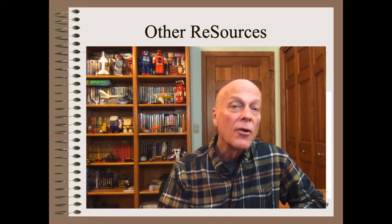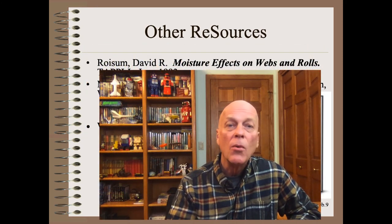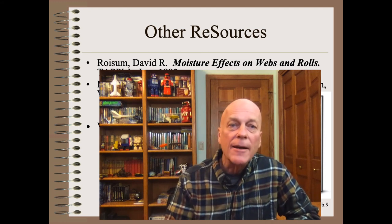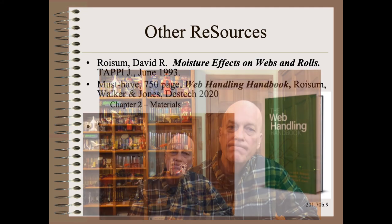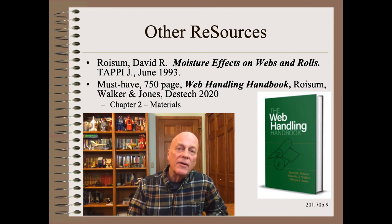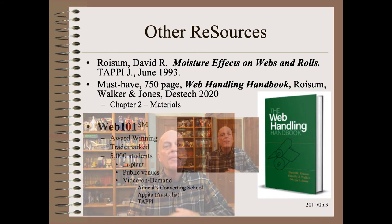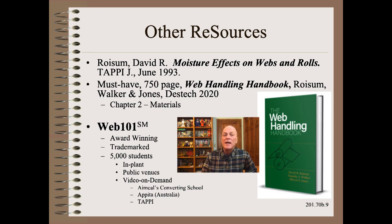There are three starting points for a more detailed description of moisture and temperature effects. The first is a 30-year-old article that I wrote while employed in paper research that still resonates today — the laws of physics have not changed much since then, and the extensive bibliography in that article is a great starting point for scholars. The second is the must-have 750-page web handling handbook written by myself, Tim Walker, and Dylan Jones. Last but not least is my award-winning and trademarked Web 101 class, taken by about 5,000 people, where you will learn how to use material properties and the laws of physics to understand web unwinding behavior as well as web unwinding misbehavior.